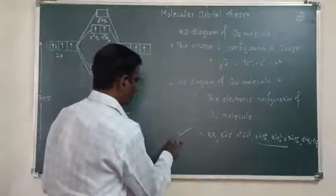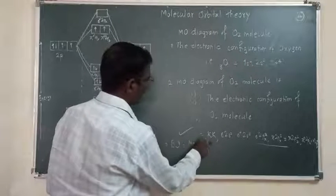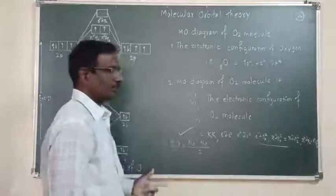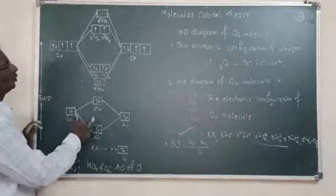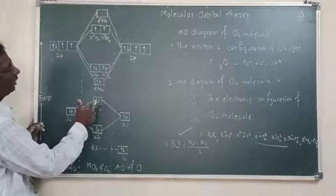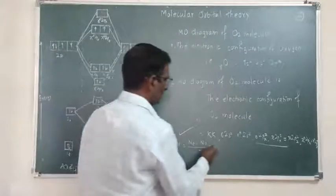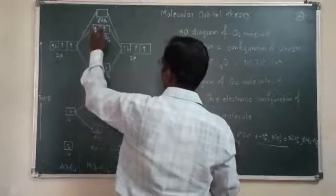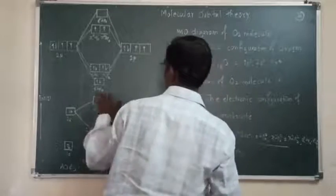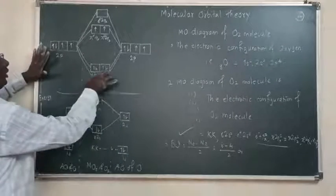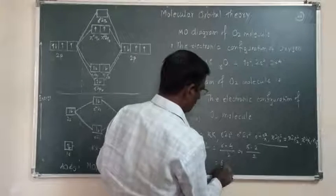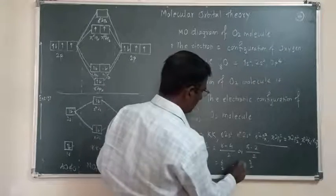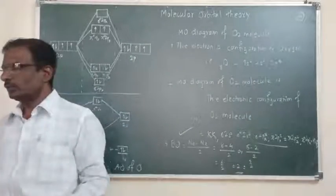Third point: bond order equals Nb minus Na upon 2, where Nb is the number of electrons in bonding molecular orbitals and Na is the number of electrons in anti-bonding molecular orbitals. Bonding molecular orbital electrons are 2, 6, 8 — that is 8 total. Anti-bonding electrons are 2 plus 2, which is 4. So bond order equals (8 minus 4) upon 2, which equals 4 upon 2. Therefore, the bond order of O2 molecule is 2.